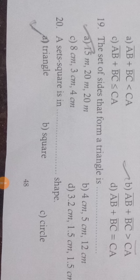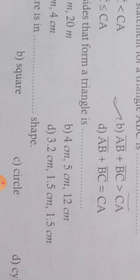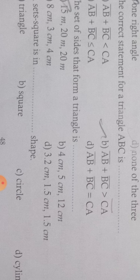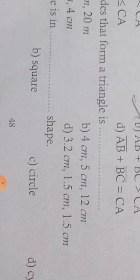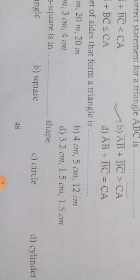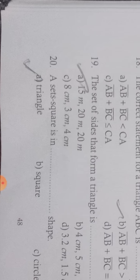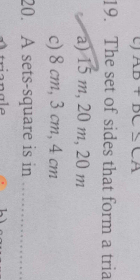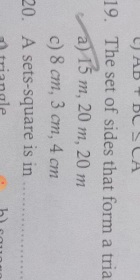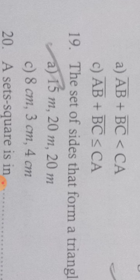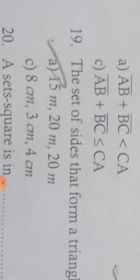To form a triangle, the condition is: if you add any two sides, it must be greater than the third side. Look at option B: 4 plus 5 equals 9, but 9 is not greater than 12, so that is not correct. For the next option: 1.5 plus 1.5 equals 3.0, but 3.0 is less than 3.2, so also not a triangle. Then 3 plus 4 equals 7, but 7 is less than 8, so not correct either. For the first option: 15 plus 20 equals 35, and 35 is greater than 20; also 20 plus 45 is greater than 15. So the first option is the correct answer.